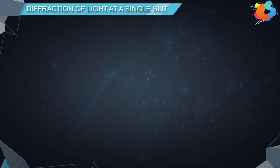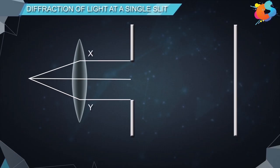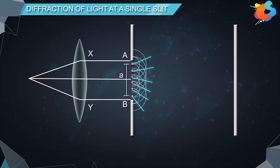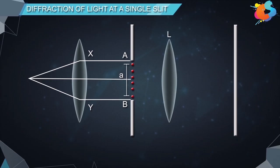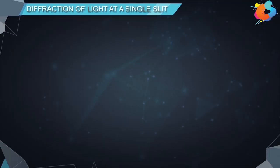If we place a screen in front of the opening, an alternate dark and bright pattern is formed on the screen. Consider a plane wavefront XY of wavelength lambda incident on a narrow slit AB of width a. According to Huygens principle, every point on the wavefront at the slit will become a source of secondary wavelets. Waves of the same amplitude are emitted from these points in all directions. With the help of a convex lens L, all these waves are focused onto a screen placed at a distance d from the slit. A diffraction pattern is obtained consisting of alternate bright and dark bands of decreasing intensity on either side of the central maximum.